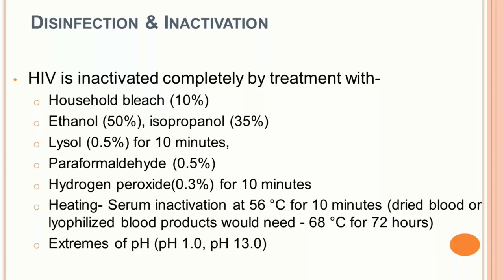Being an enveloped virus, HIV can be easily inactivated by surface-active agents. Effective chemicals include household bleach (a chlorine-based compound), ethanol, isopropanol, Lysol, paraformaldehyde, and hydrogen peroxide. Physical methods include heat at 56°C for 10 minutes. Extremes of pH also inactivate the virus — it does not survive at highly acidic pH of 1 or highly alkaline pH of 13.